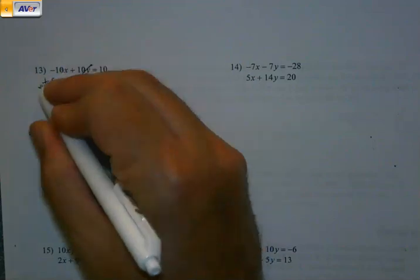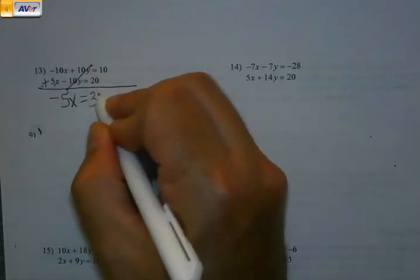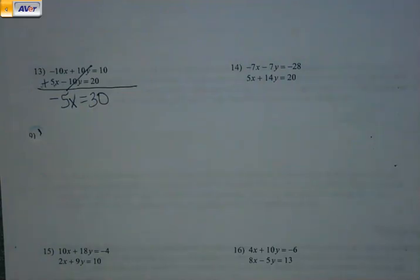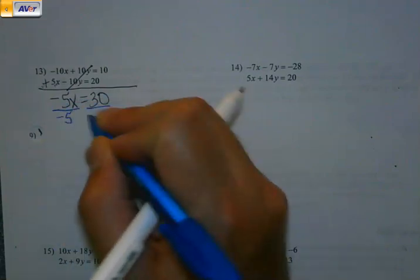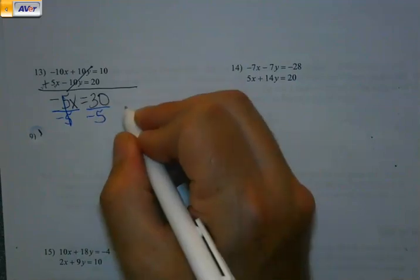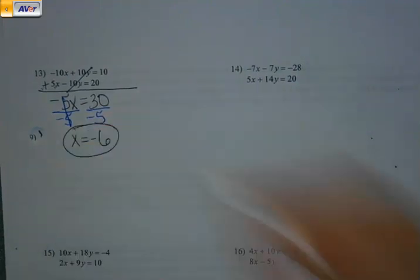So I add my x's. Negative 10x plus 5x plus 10x plus 20 is 30. I go ahead and get my x value.